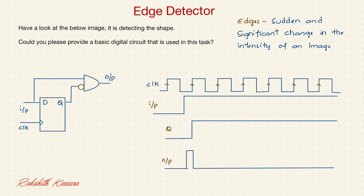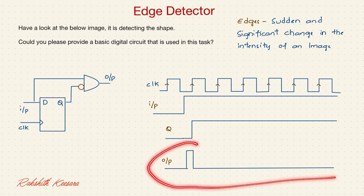So this will be the output. Now don't think that this is detecting the edge. This is merely a glitch. A glitch like this.